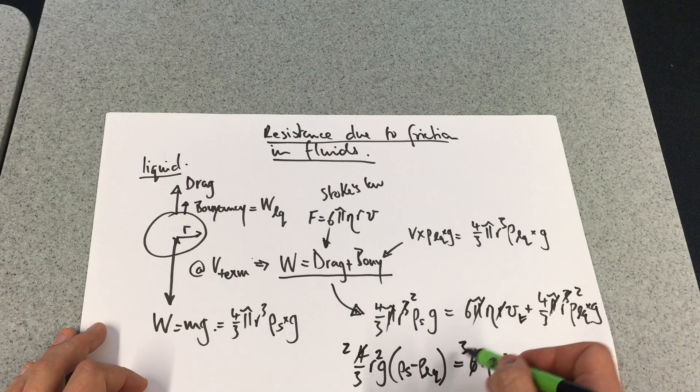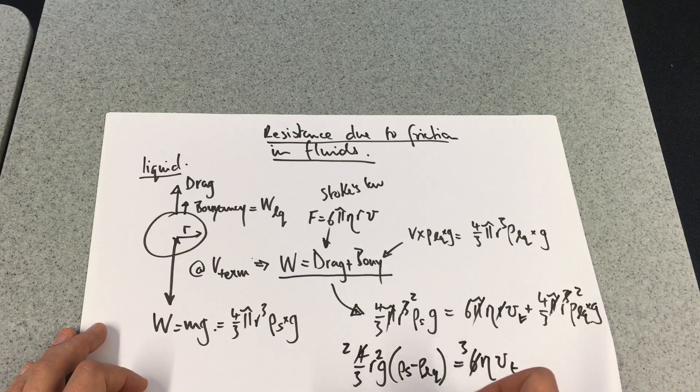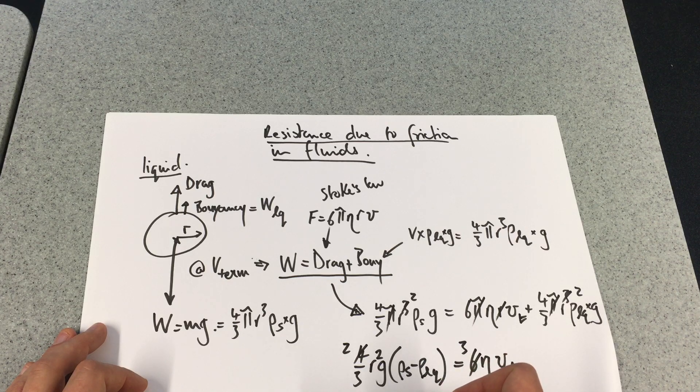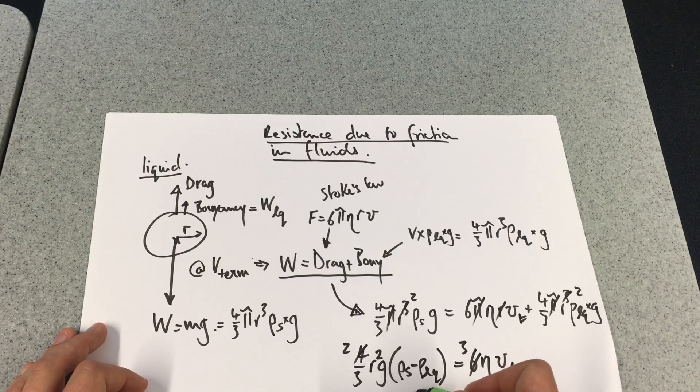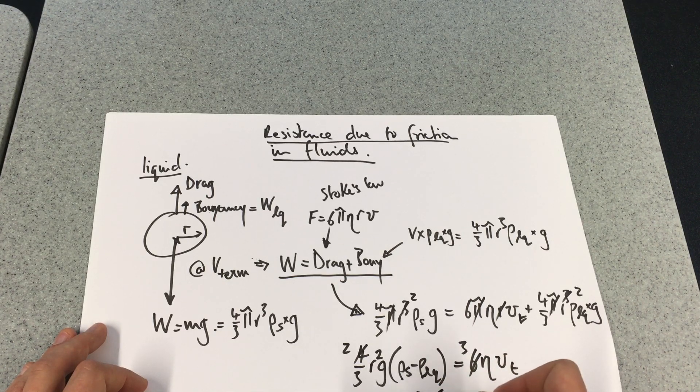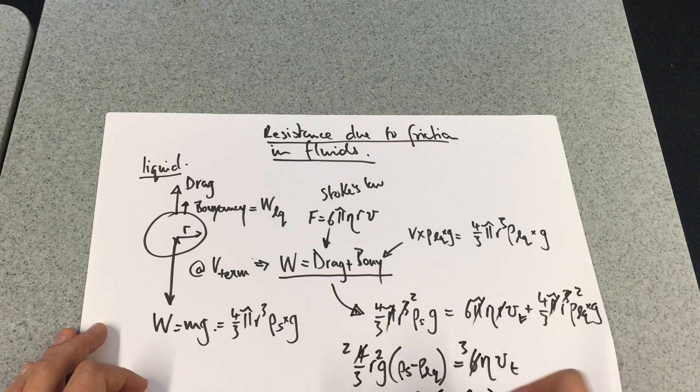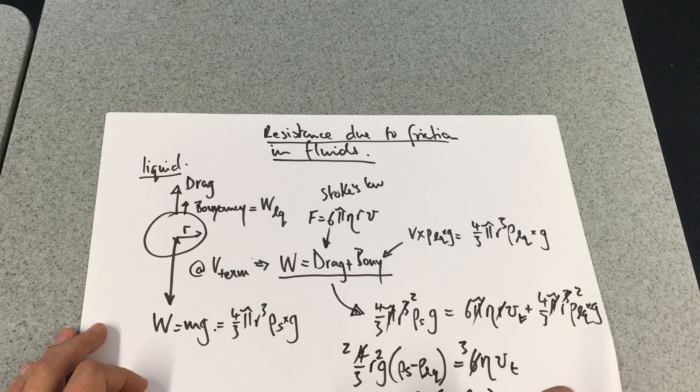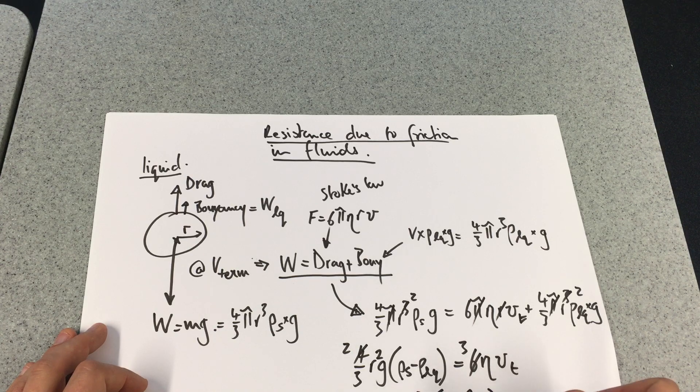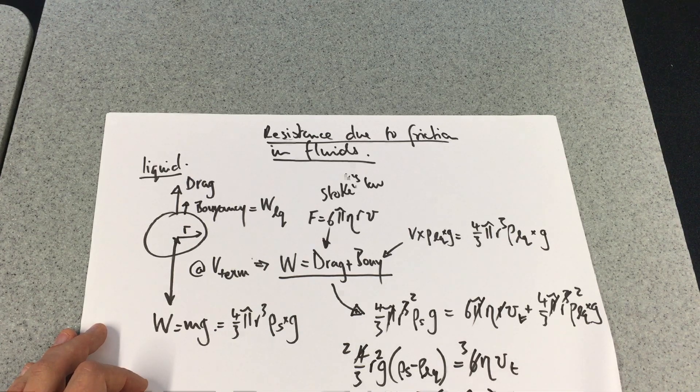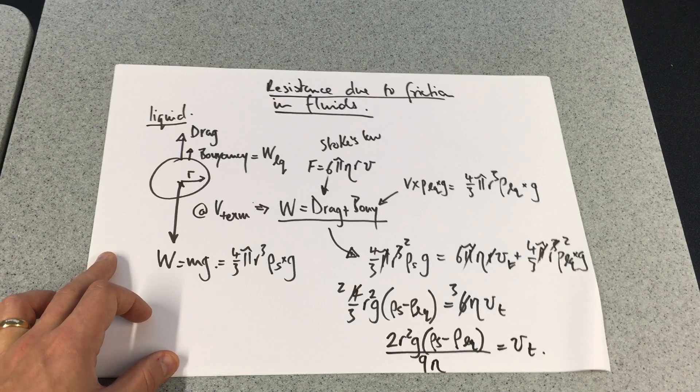Leaving me with 2r²g(ρ_steel - ρ_liquid) divided by 9ν gives me v_terminal. You can just see that there.